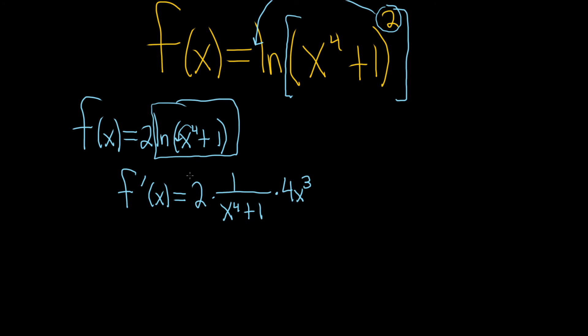The last thing to do is maybe multiply these numbers, the two and the four. So this is equal to 8x cubed, and it's all being divided by x to the four plus one. And that would be the final answer.